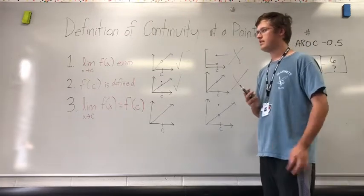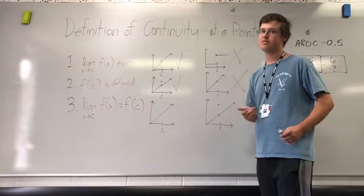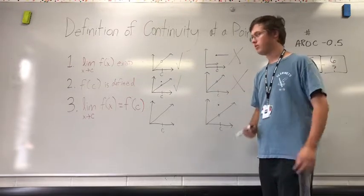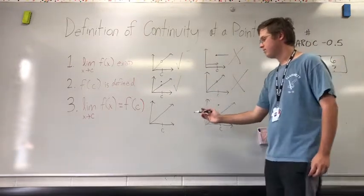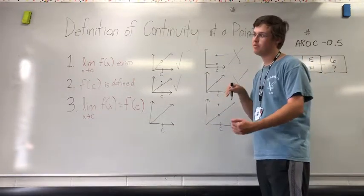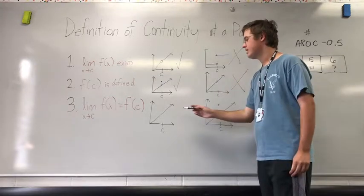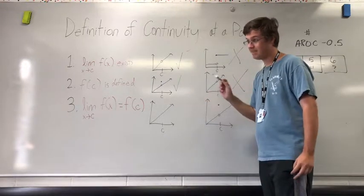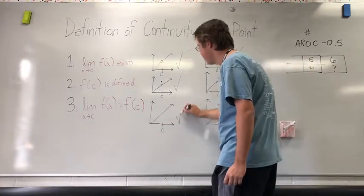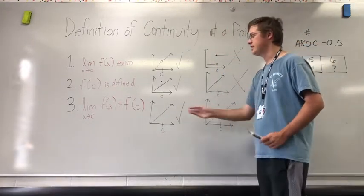The last requirement is that, assuming we have a limit and a defined point at x equals c, these two values must equal each other. In the case of this graph, we see that there is a limit as the approach is the same on both sides, and that when x equals c, the defined point is the same as the limit. So this does meet all three stipulations — therefore, this function is continuous.